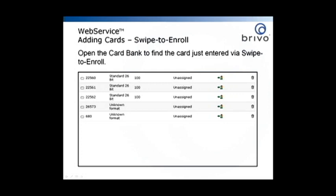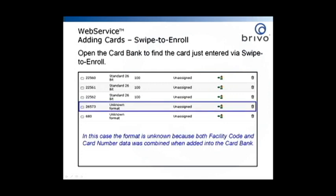Open the card bank to find the card just entered via swipe to enroll. In this case, the format is unknown because the facility code and card number data was combined when added into the card bank.